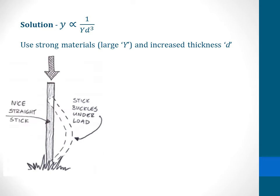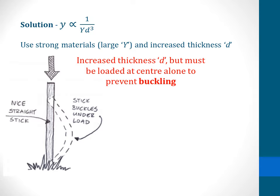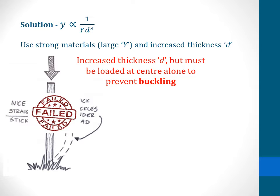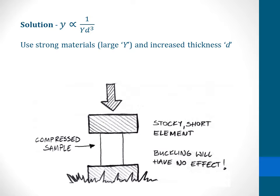Let us see some examples and arrive at the best solution possible. Here we have taken a stick which is straight and long, and when we subject it to a load, the stick undergoes buckling. This increased thickness must be loaded only at the center and not along the entire width of the beam, so this is not a viable option. Next, a beam which is short and stocky at the center with wider flanges at the top and bottom will not be affected by buckling, so this is also not viable.